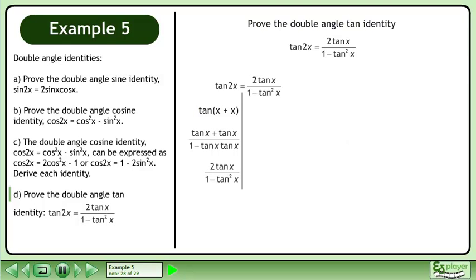Applying the tangent sum formula gives us 2tanx over 1 minus tan²x. The left side equals the right side, completing the proof.